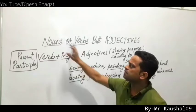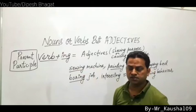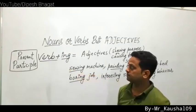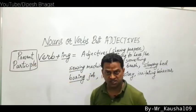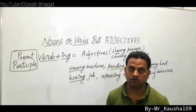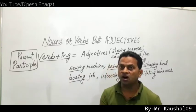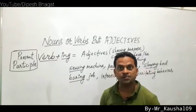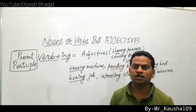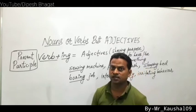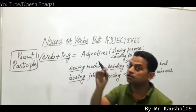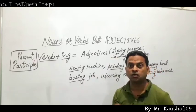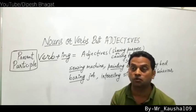Now let's see how verbs become adjectives. Verb plus -ing is called a present participle. When we add -ing to a verb, that is a present participle. Present participle can be used as an adjective. A present participle used as an adjective shows the purpose of something, or it shows 'causing to have or to be something.'